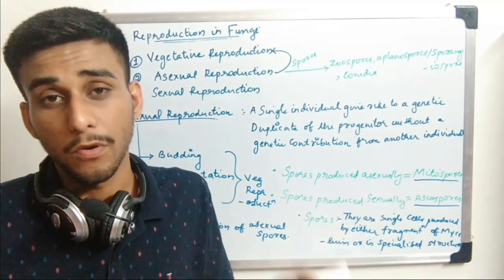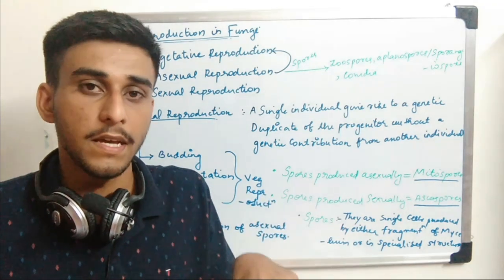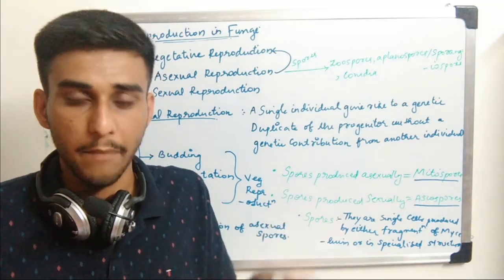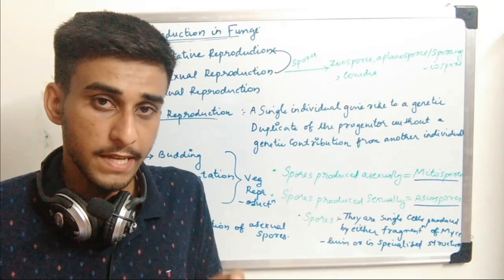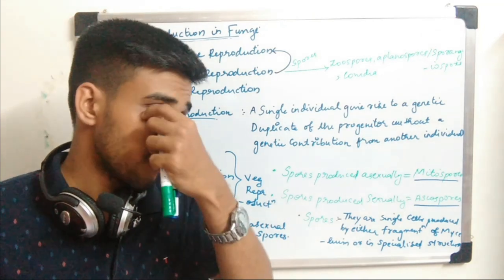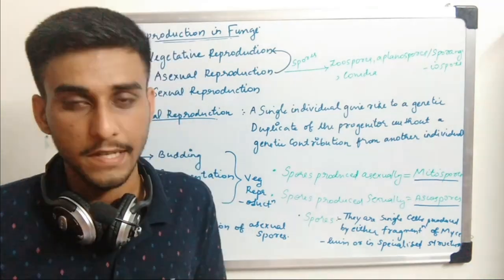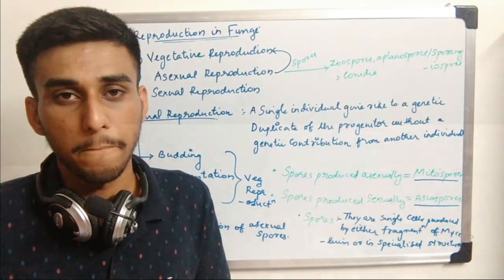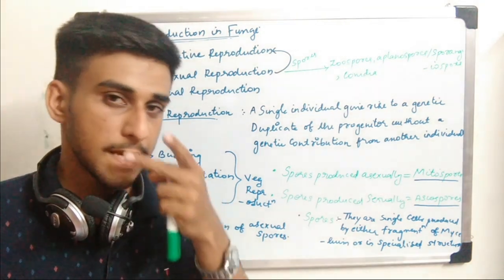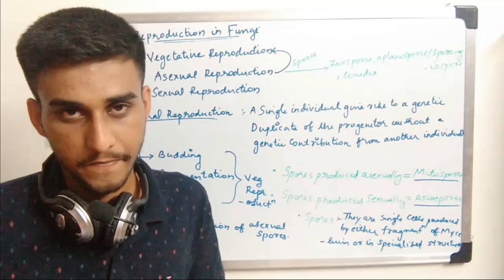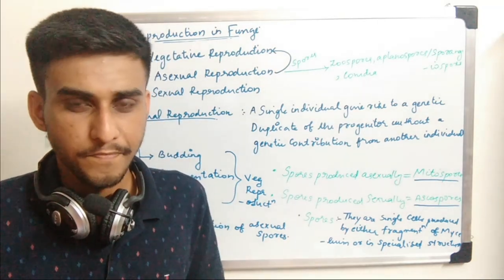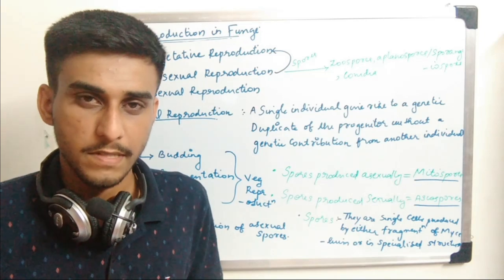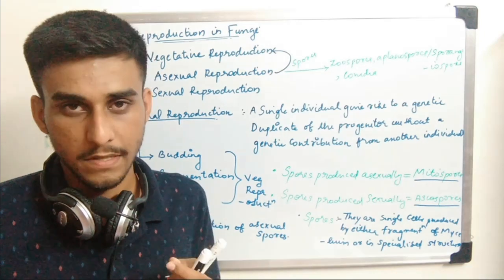During unfavorable conditions, fungi reproduce sexually — they produce their gametes. We will study the life cycle of fungi in very detail when studying the classification of fungi. So we have talked about sexual reproduction, asexual reproduction, and vegetative reproduction.